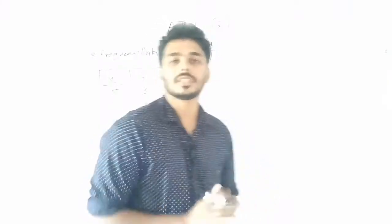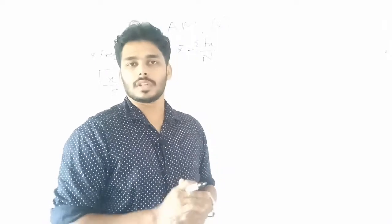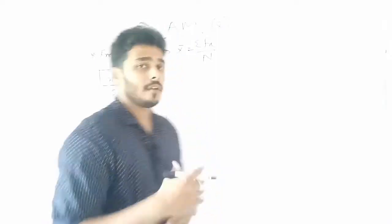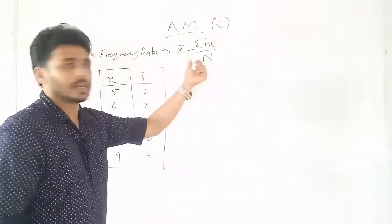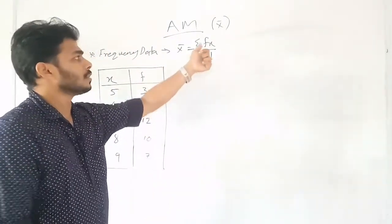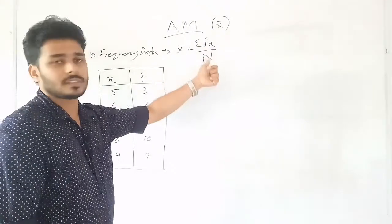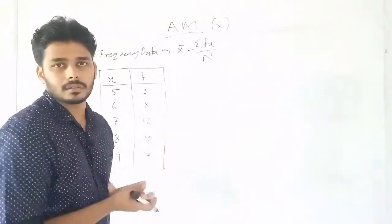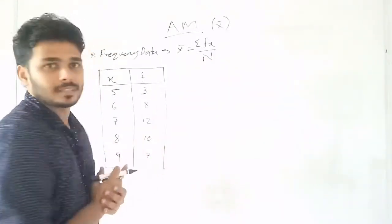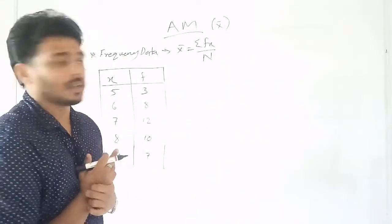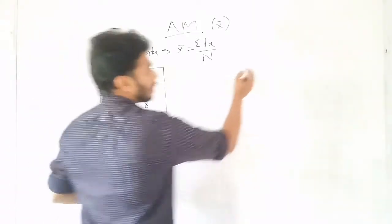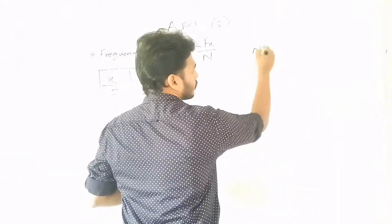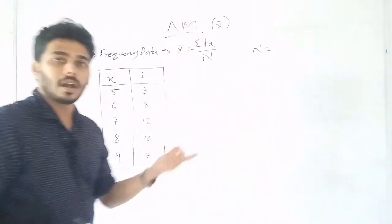The next is frequency data. The equation is x̄ = Σfx / N. Capital N means Σf — the sum of frequencies. We need to calculate Σfx and then divide by N to get the arithmetic mean for frequency data.